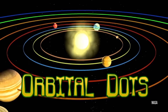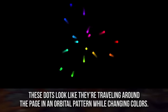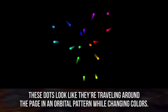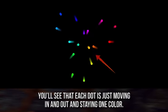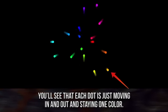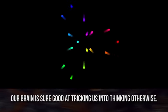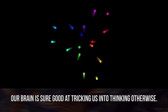Orbital Dots. These dots look like they're traveling around the page in an orbital pattern while changing colors. But look at each individual dot. You'll see that each dot is just moving in and out and staying one color. Our brain is sure good at tricking us into thinking otherwise.